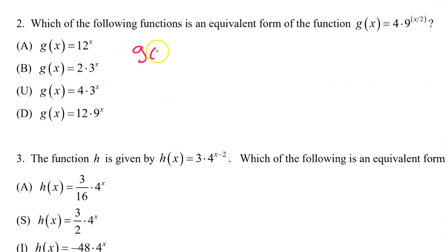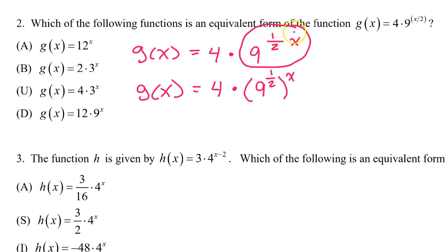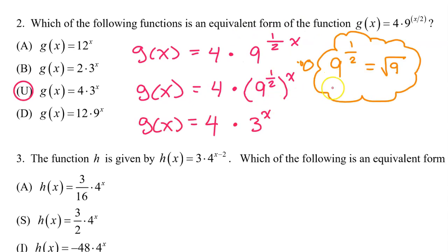Number 2: g(x) equals 4 times 9 to the x over 2, which is the same as one half x. As on the last problem, we can rewrite this part as 9 to the 1 half power, all raised to the x power. Now 9 to the 1 half power is the same thing as the square root of 9, which is 3. So we end up with g(x) equals 4 times 3 to the x power, and the answer is U.